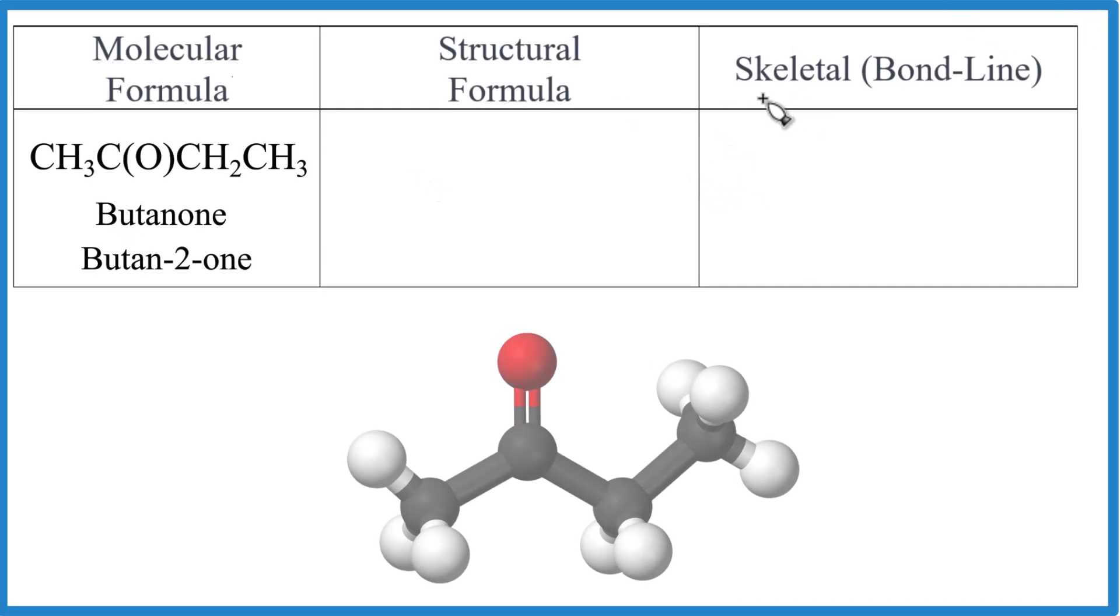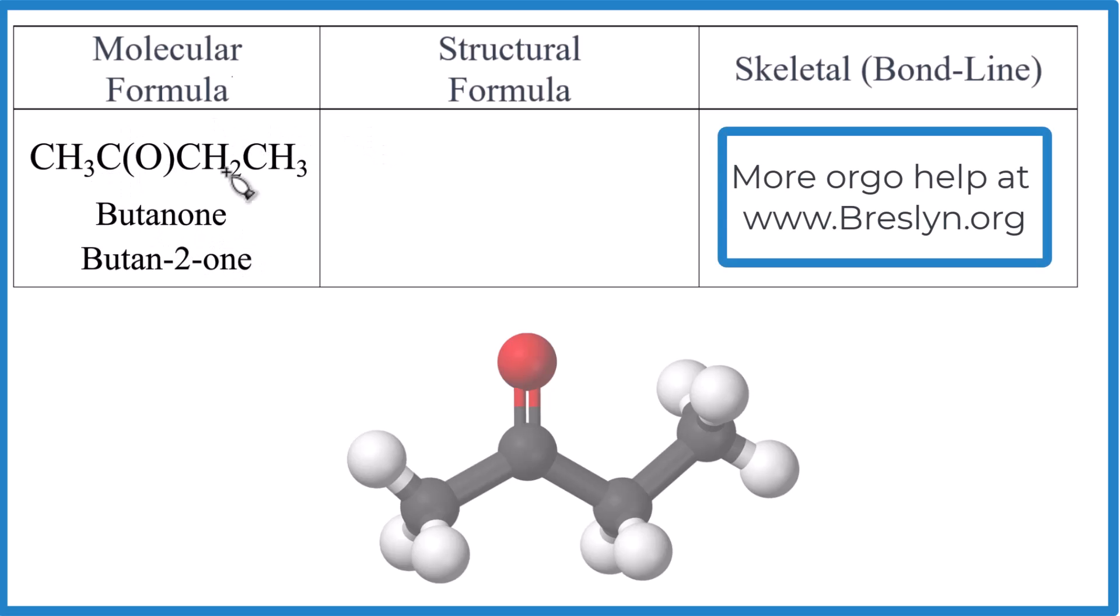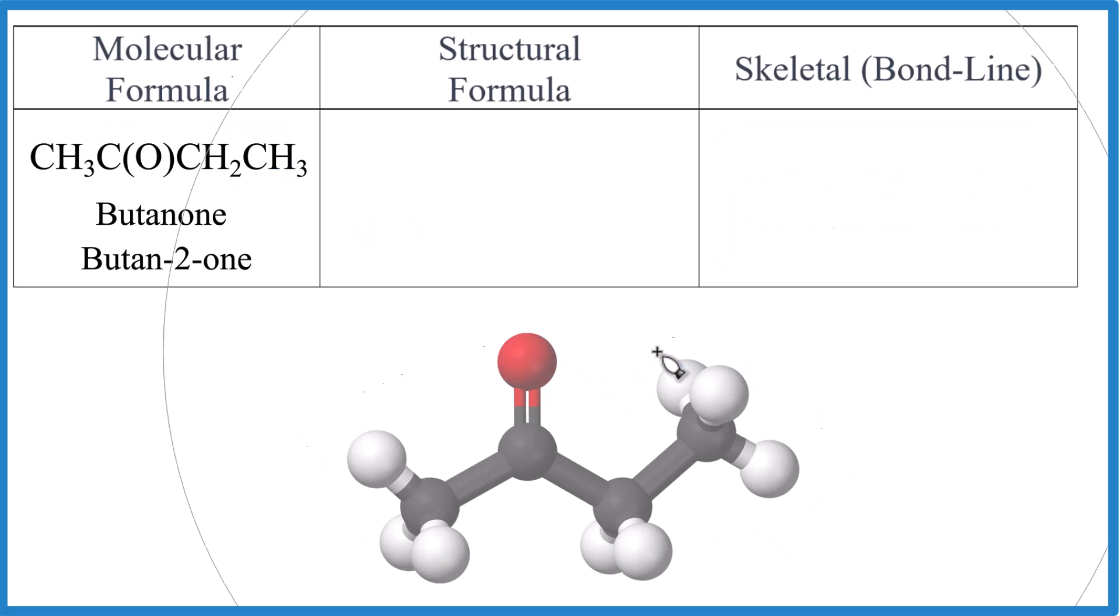So we're going to write the skeletal formula here. The skeletal formula, also called the bond line formula for butanone. It's also called butan-2-one. Either one of those names is okay. So we're given this molecular formula right here. That gives us a lot of information. I've also given you the molecular model for butanone.